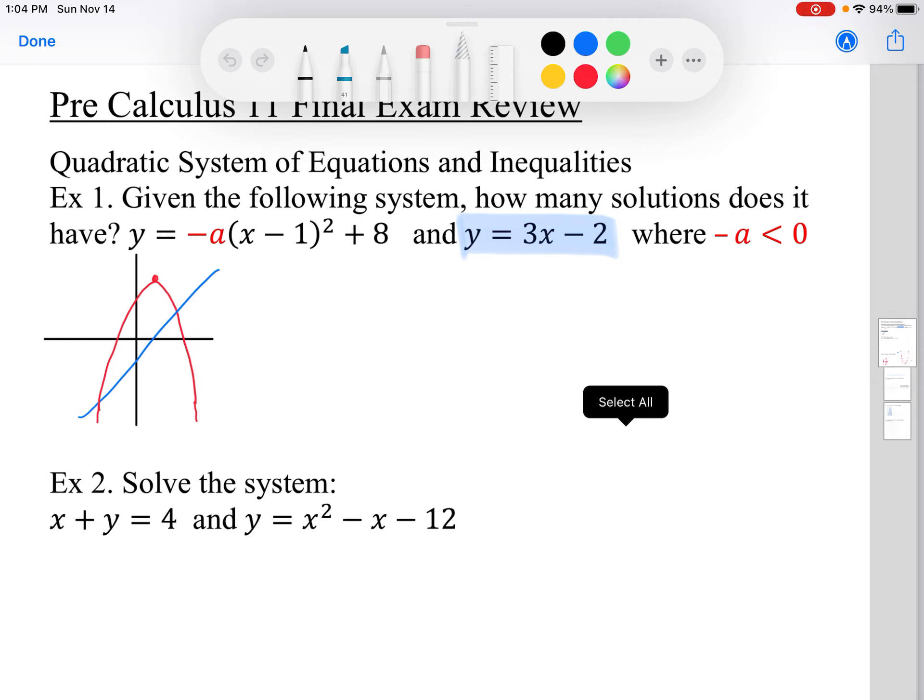Now the key information here is that a is less than 0 and we have a vertex that is in the positive, in quadrant 1. If we can imagine what this looks like, it's an upside down parabola and we have a linear function with positive slope cutting through the parabola in this way.